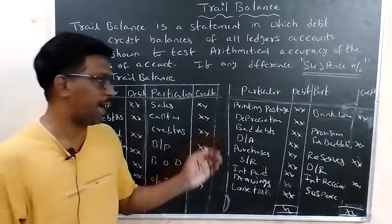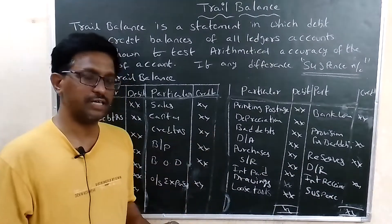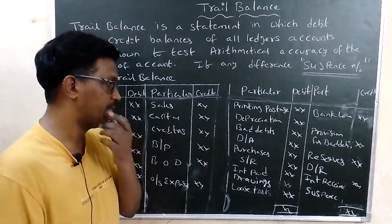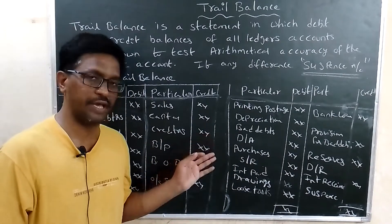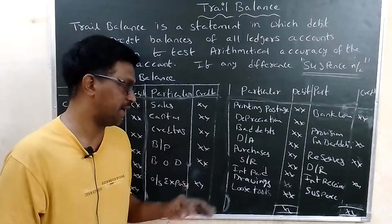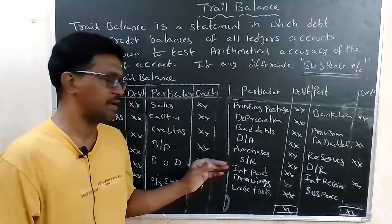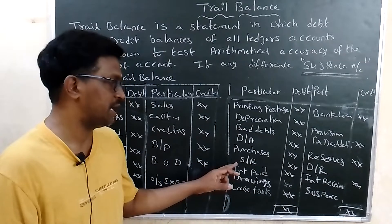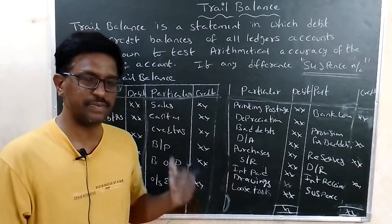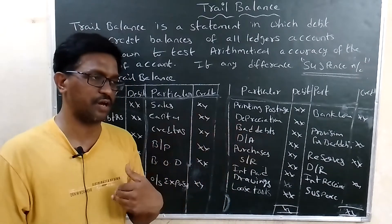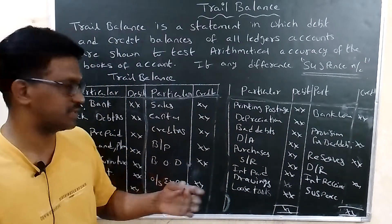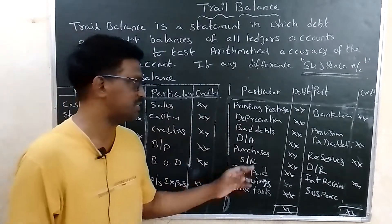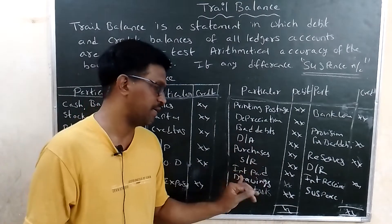Losses such as bad debts and discount allowed are shown in the debit side. Purchases are shown in the debit side. Sales returns — meaning goods returned by customers — are also losses shown on the debit side.